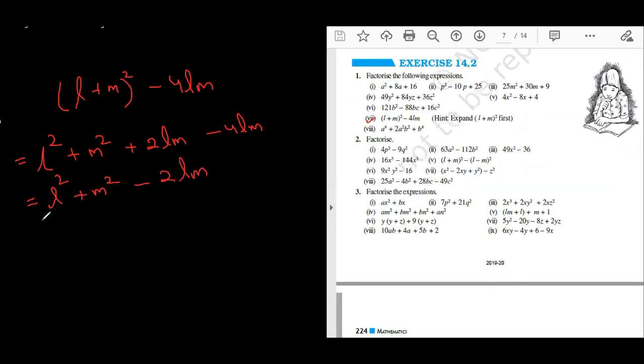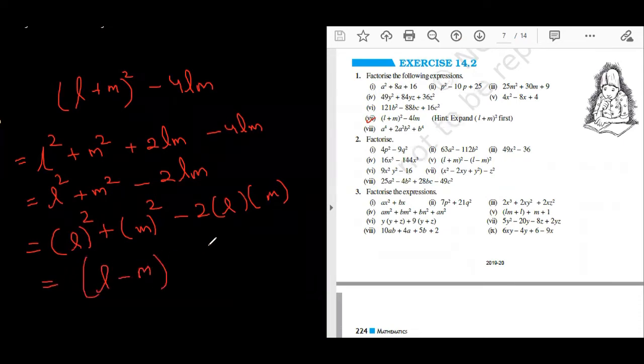2 minus 4 will be minus 2lm. Now identity will happen. a square plus b square minus 2ab. Is it making sense? Which is l minus m whole square. Therefore, l minus m, l minus m are the factors. Is this thing clear?